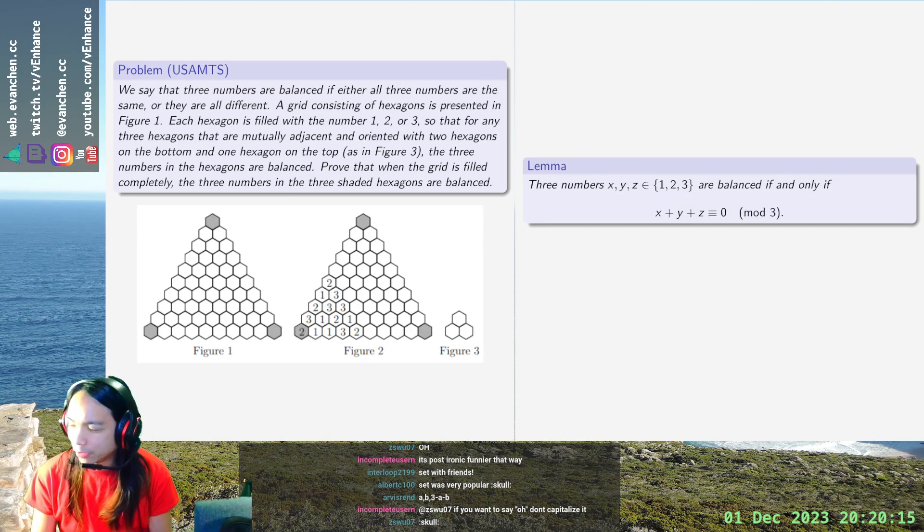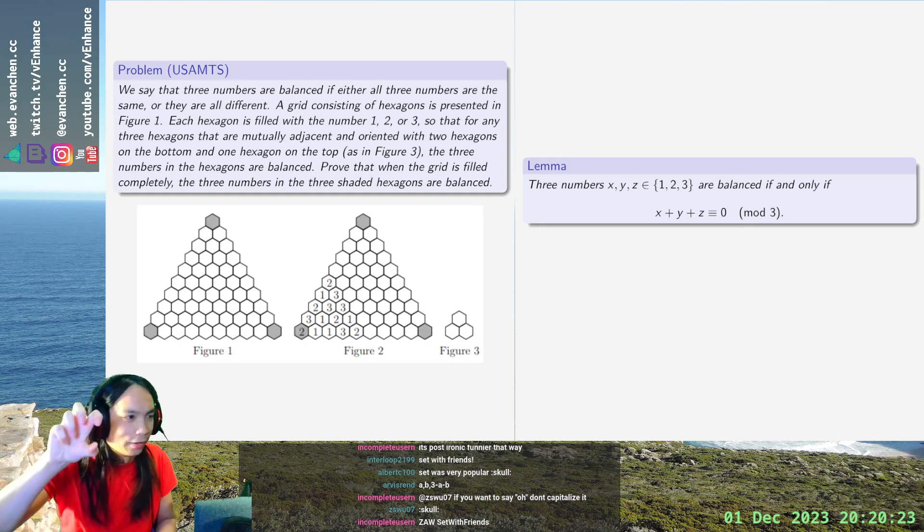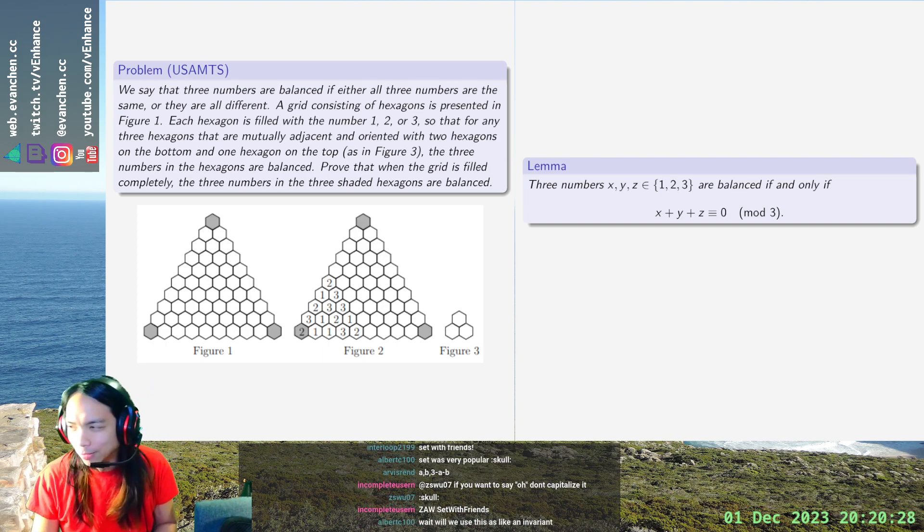So, in other words, the condition is saying that if you look at everything mod 3, in each row, every entry is the sum of the two things below it. So, it's sort of like Pascal's triangle but upside down. Okay.